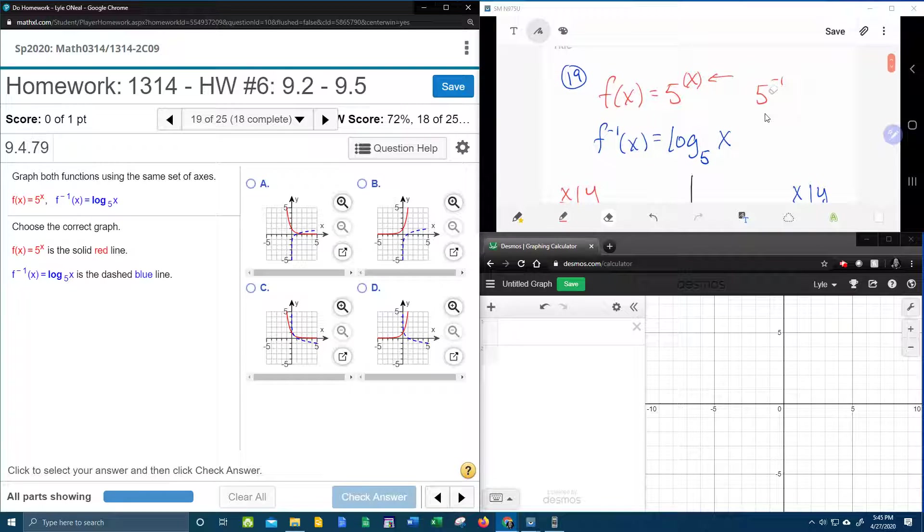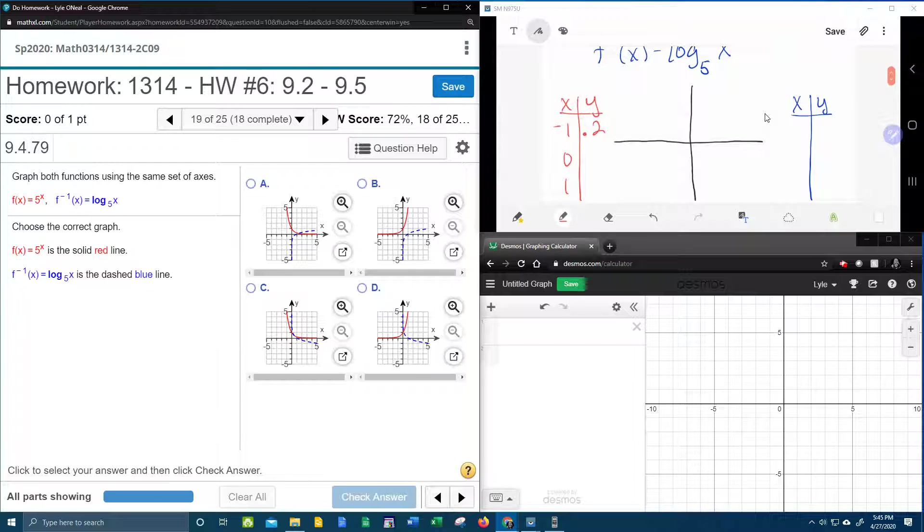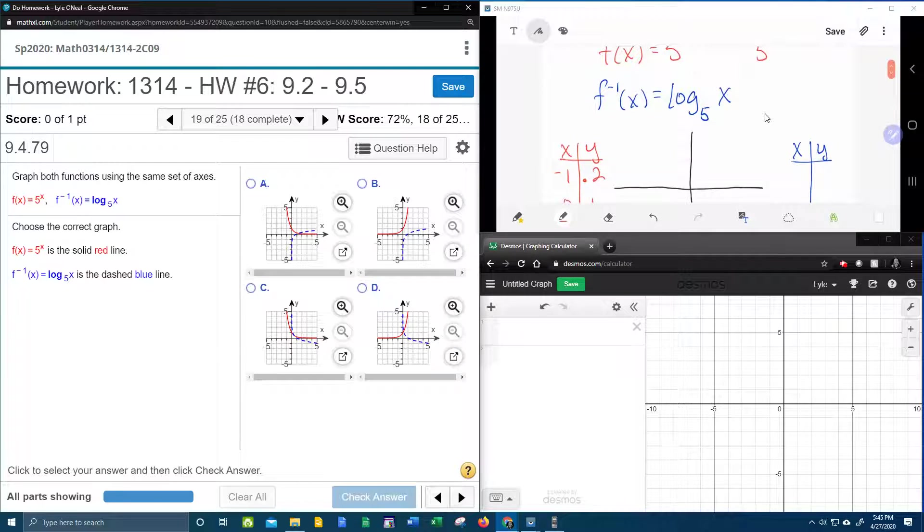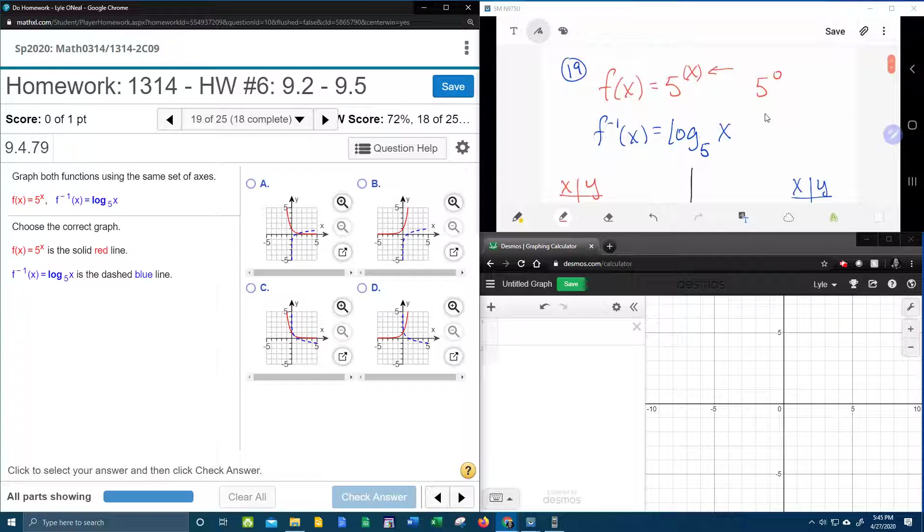Next, we want to do 5 to the 0. And we know that any non-zero number raised to the 0 power is 1, or at least I hope you know that. Anything to the 0 power is 1.